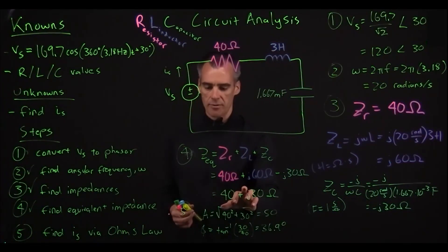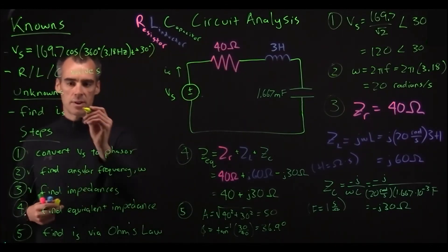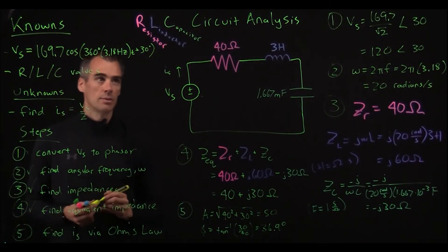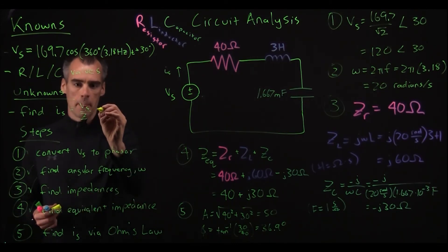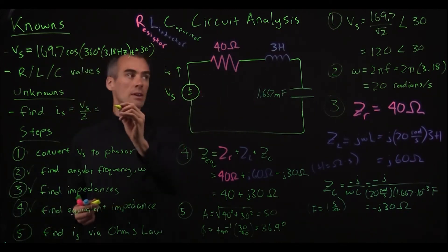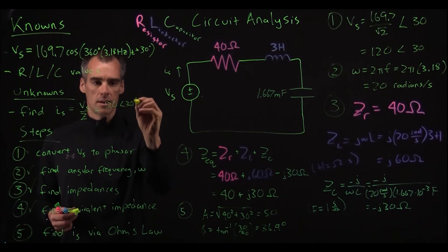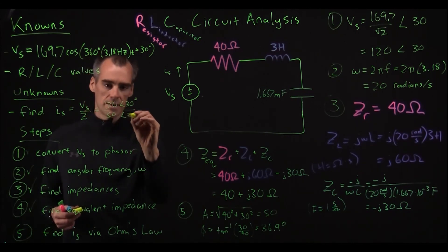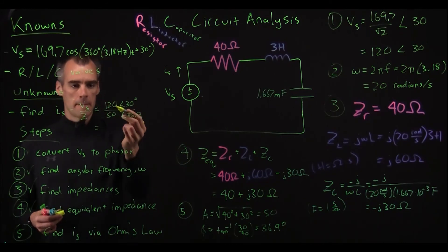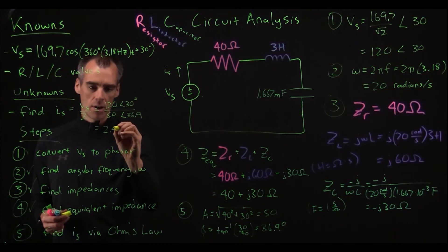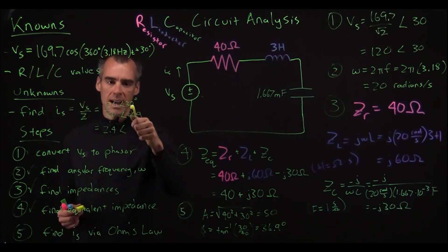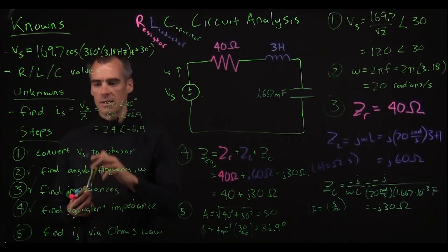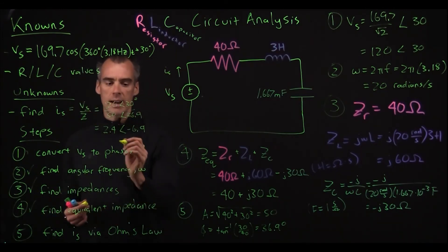So knowing that, we can convert this into its phasor form, and let's go ahead and finish 5 up here. So IS, according to Ohm's Law, is just going to be Vs over Z, which is our new R, since we're working with the RLC circuit analysis. And we found Vs up here, so that's going to be 120 angle 30 divided by our new Z, which is going to be 50 with an angle of 36.9. So to find that amplitude, we're just going to divide 120 by 50, which gives us 2.4. And that angle, we're just going to subtract 36.9 from 30, and that's going to give us negative 6.9.